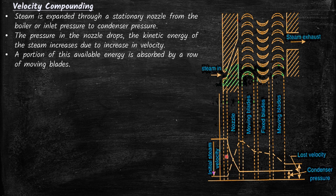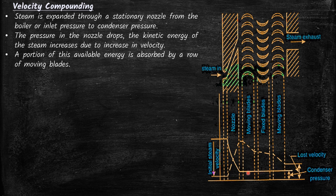A portion of this available energy is absorbed by a row of moving blades. As the steam moves over the moving blades, its velocity drops — the kinetic energy is transferred to the moving blade, giving it sufficient velocity to rotate. However, the pressure remains constant throughout the set of blades as the steam flows over the moving blades.